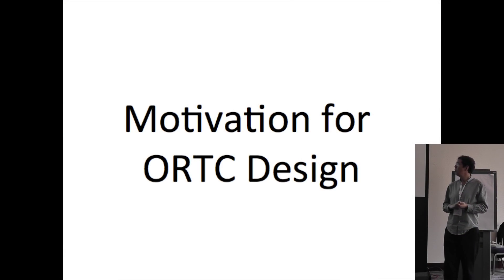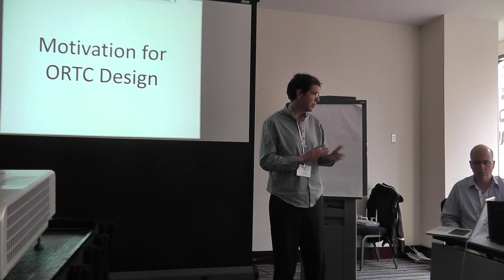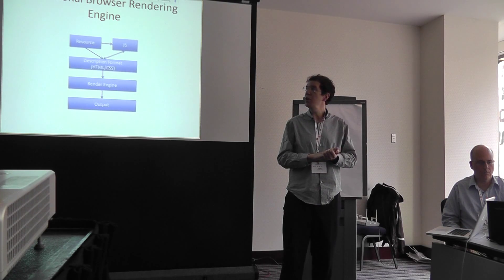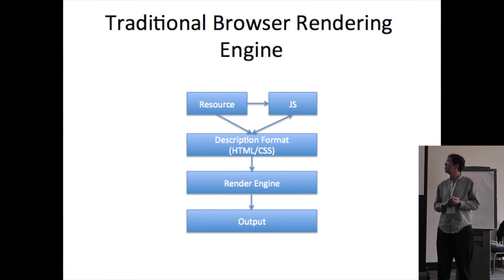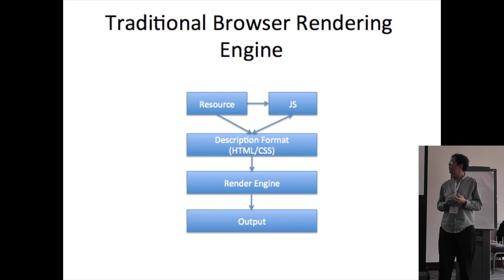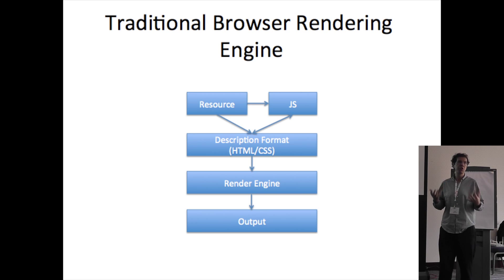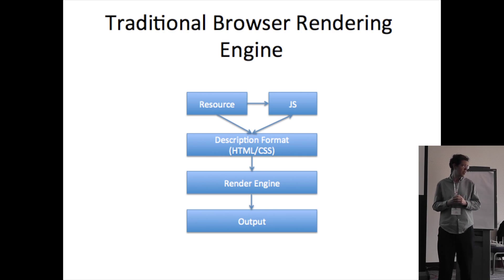So what is the motivation for doing this? This is a traditional browser rendering engine. Your resource is your HTML page, your CSS page, or whatever you have. You have JavaScript that can fetch it, or your browser can fetch it directly. You can manipulate it — it's basically a description language that you manipulate in order to cause rendering in the browser engine. And that's how a traditional browser engine works.